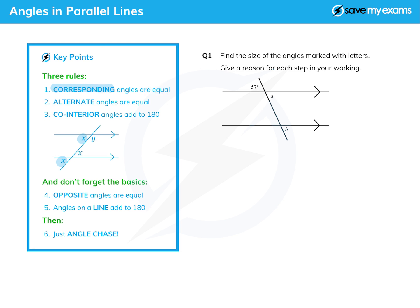Then we have the other pair of x's here like that, which we used to call Z angles but are now always called alternate angles, and they are equal as well.